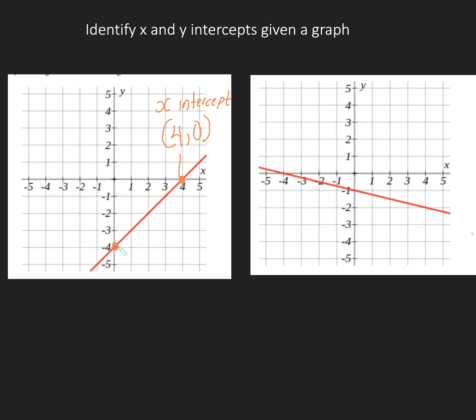Here this is my y-intercept because this is where my graph is cutting the y-axis. Because it's the y-intercept I have a value for y. So y is negative 4, therefore x is 0.